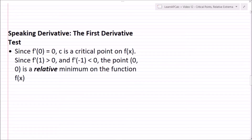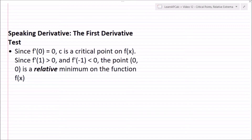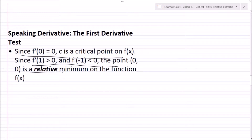Note that I bolded and italicized the word 'relative' — you should not say it is a minimum, because that implies absolute minimum. You want to say relative min or relative max. For any critical point or extrema you're finding, follow the same format on the AP test.